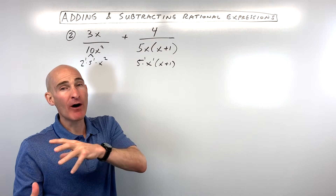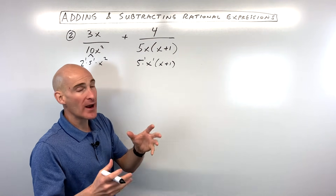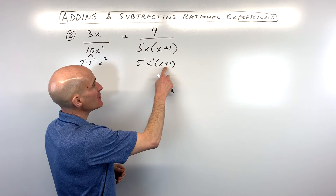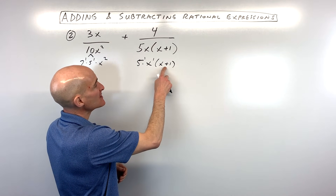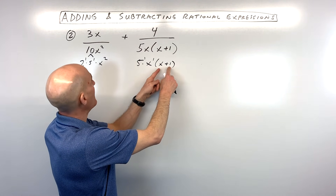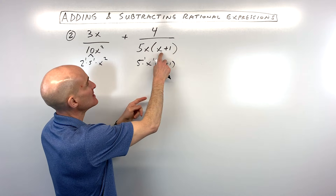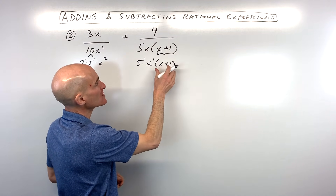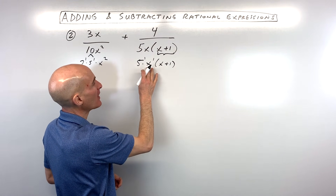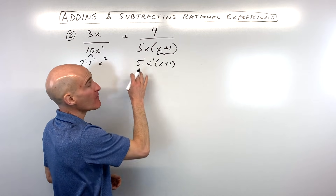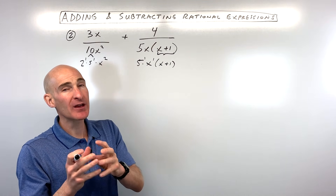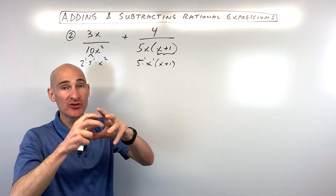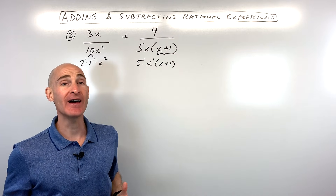When you think about factors, factors are the quantities that are multiplied together. Sometimes people mistakenly think of x and 1 as separate factors, but they're really not — this whole binomial is one group, and it's multiplied by the monomial. You don't want to think about adding and subtracting; you want to see what's multiplied together. Those are the groups, those are the factors.